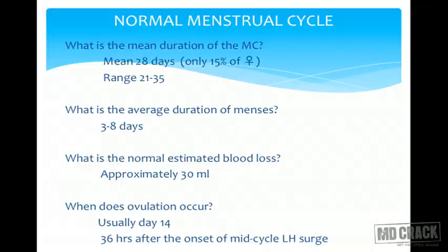The mean duration of the menstrual cycle is 28 days, but only in 15% of females is the cycle actually 28 days. Otherwise, the range is 21 to 35 days, and that is quite normal if the cycle is regular. The average duration of menses is three to eight days. Normal estimated blood loss is considered 30 ml throughout the period.